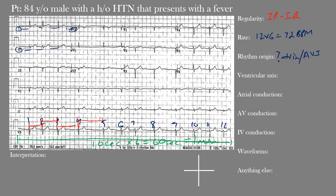For the ventricular or QRS axis, you should have gotten a leftward QRS axis. The actual value here was negative 25 degrees. To find the electrical axis, we look at the QRS complexes. Normal ventricular axis lies between negative 30 degrees and about positive 105 to 110 degrees.